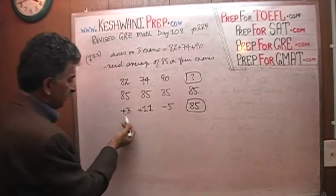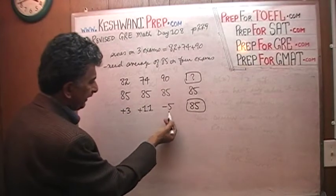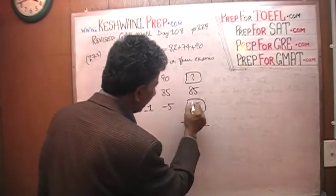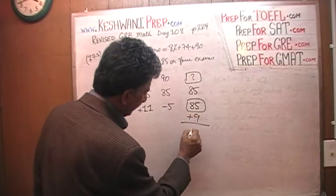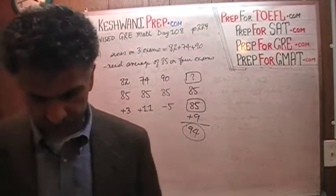Let's see what they are up to. 3 plus 11 is 14. 14 minus 5 is 9. So she needs nine more points. 85 plus 9 is 85 plus 10 will be 95. So she needs 94 points. That's it. We are done. She needs 94 on the last exam.